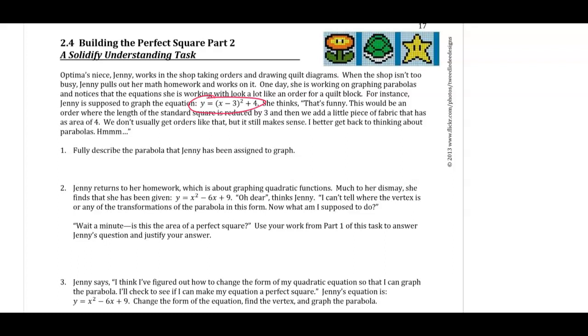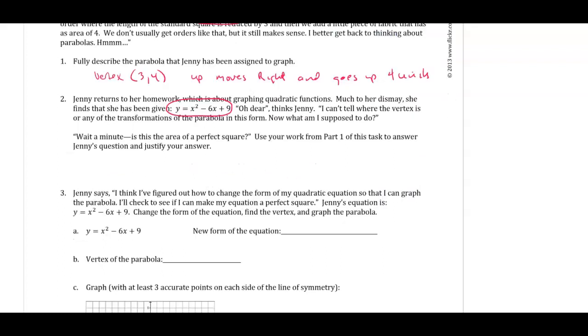So when it says fully describe the parabola that Jenny has been assigned to, if you look at the transformations, it's a parabola whose vertex would be at (3, 4), meaning it opens up, it moves right, and goes up 4 units. So with this in mind, when we get this new parabola or this new graph, this is what we call standard form, which is y equals ax squared plus bx plus c.